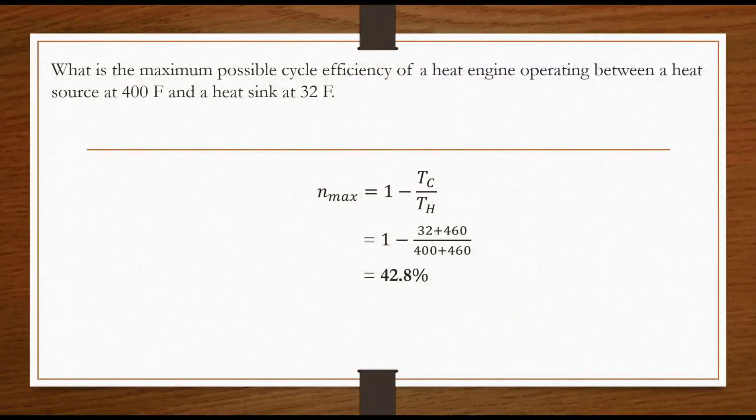So, 1 minus 32 plus 460, let's just add 460 as it is in Fahrenheit. So, 32 plus 460 plus 400 Fahrenheit plus 460.